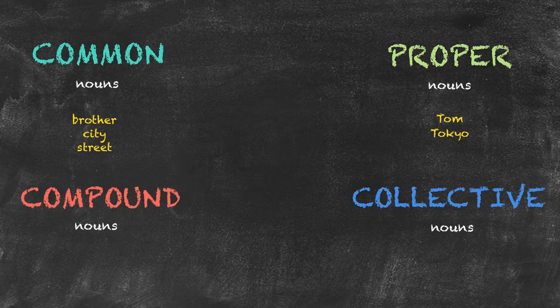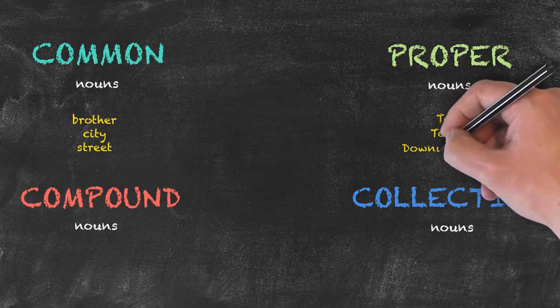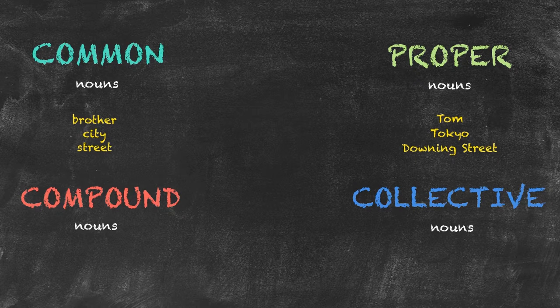You have Tokyo. Tokyo is the proper name of a city. And Downing Street. Downing needs the capital as it's the proper name of the street.